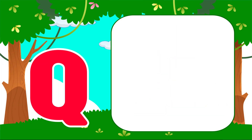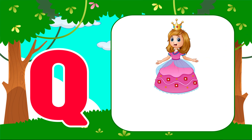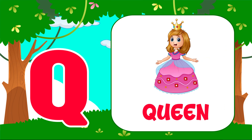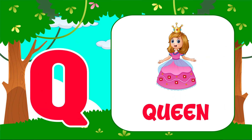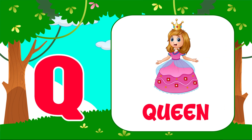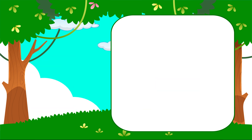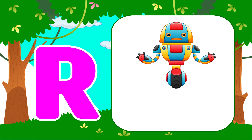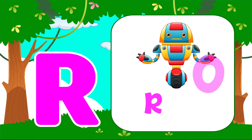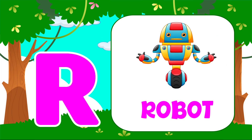Q is for queen, q-q-q-queen. Q is for queen, q-q-q-queen. R is for robot, r-r-robot. R is for robot, r-r-r-r.